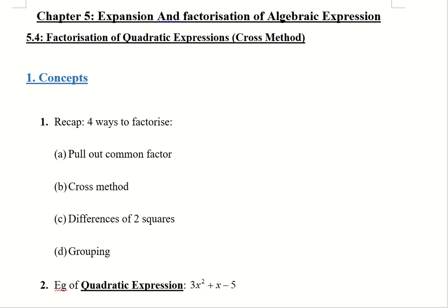I'm going to touch on the concept very briefly first before moving on to examples. Let's do a quick recap on the four ways to factorize an expression: pulling out common factor, which you have already learned; cross method, which you are going to learn today; differences of two squares, in the upcoming lesson; and grouping, which will be in set 3.